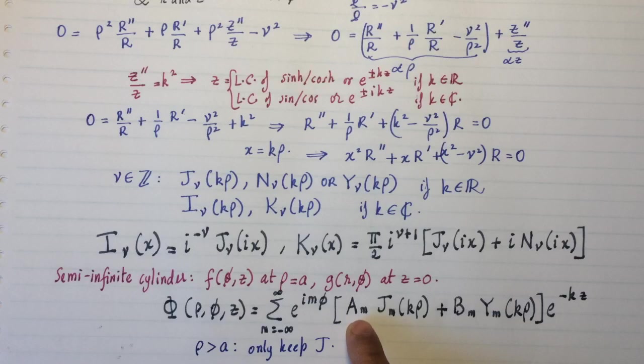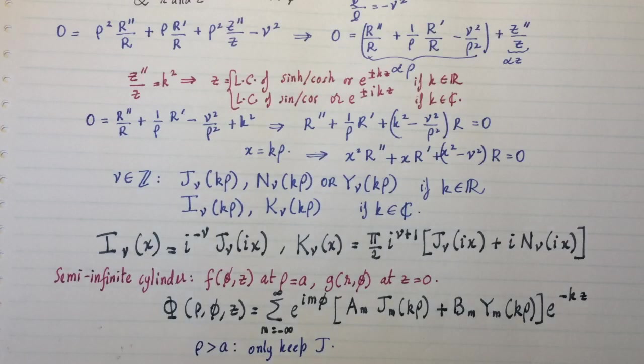Once you have that, the coefficients come from the Fourier-Bessel orthonormality relations, which you can only get if you have a specific instance of what f is. In the next video, I will show you how to determine these coefficients in a specific example. But this is a general setup.